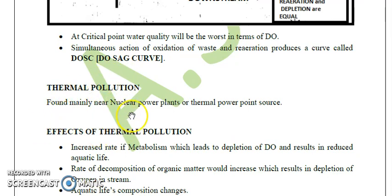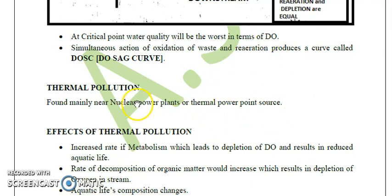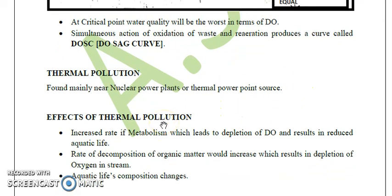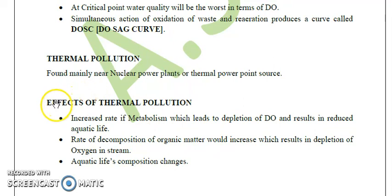Thermal pollution is generally observed near nuclear power plants built for electricity or energy production, or near thermal power plants which are also built for electricity production. We will now observe some of the effects of thermal pollution.